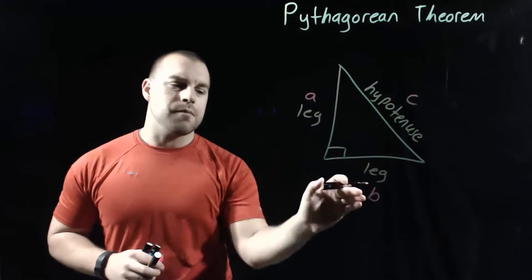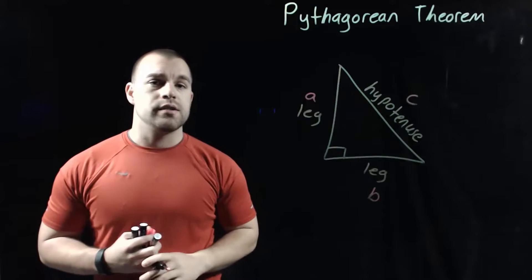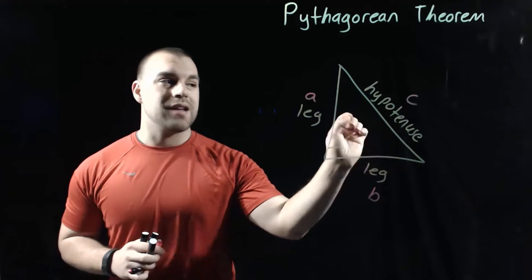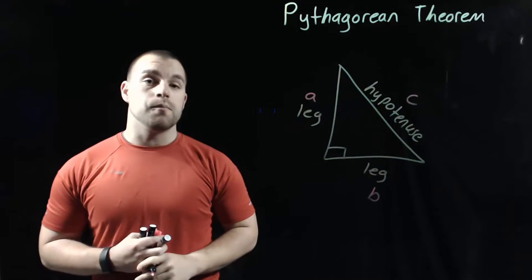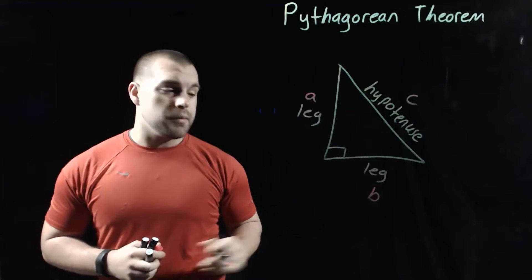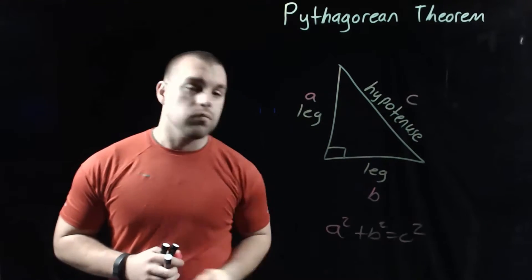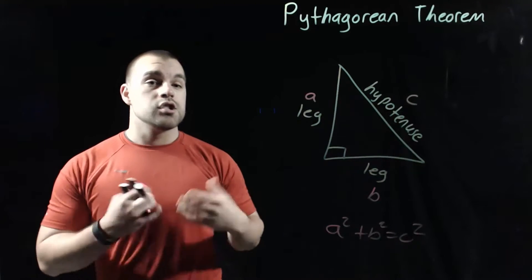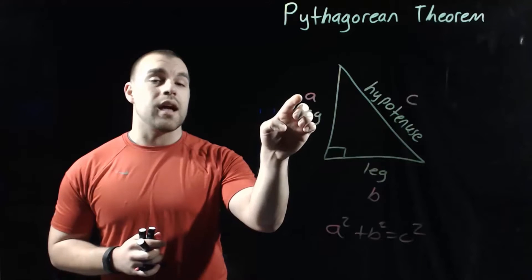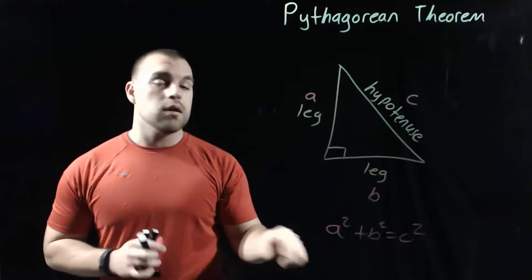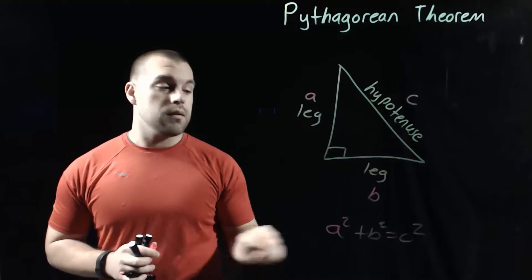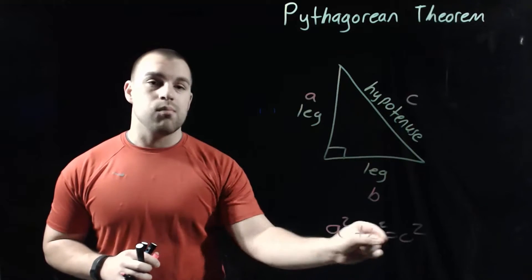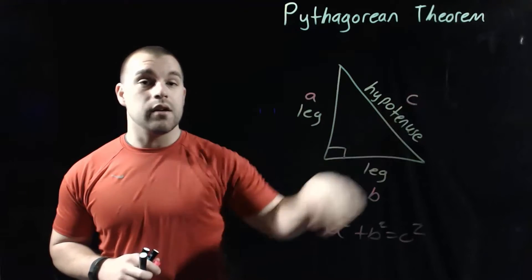I labeled the legs A and B, and I labeled the hypotenuse C. The most important part of the Pythagorean Theorem is that the hypotenuse has to be the C value. The Pythagorean Theorem says A squared plus B squared equals C squared. So what that's saying is if we have the length of the A leg squared plus the length of the B leg squared, that sum will equal the C value squared.